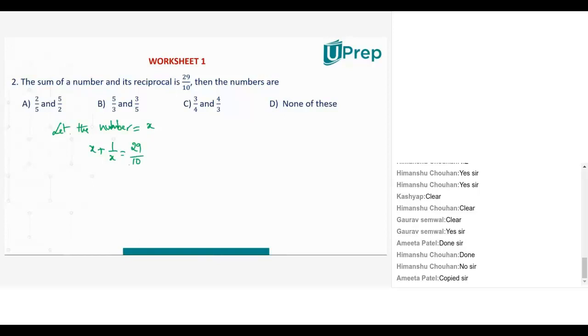Now there are two fractions on both sides. So let's cross multiply, 10 into x square plus 10 equal to 29 into x. So what is the standard equation? 10 times x square minus 29 times x plus 10 equal to 0. This is the equation which we need to solve.